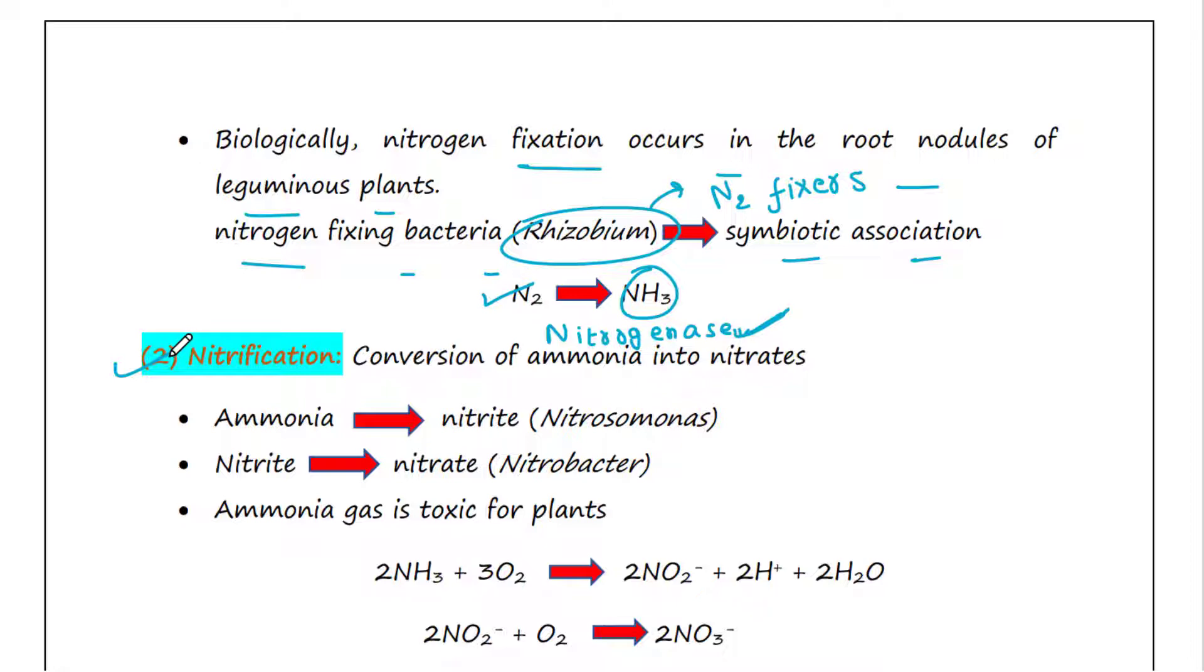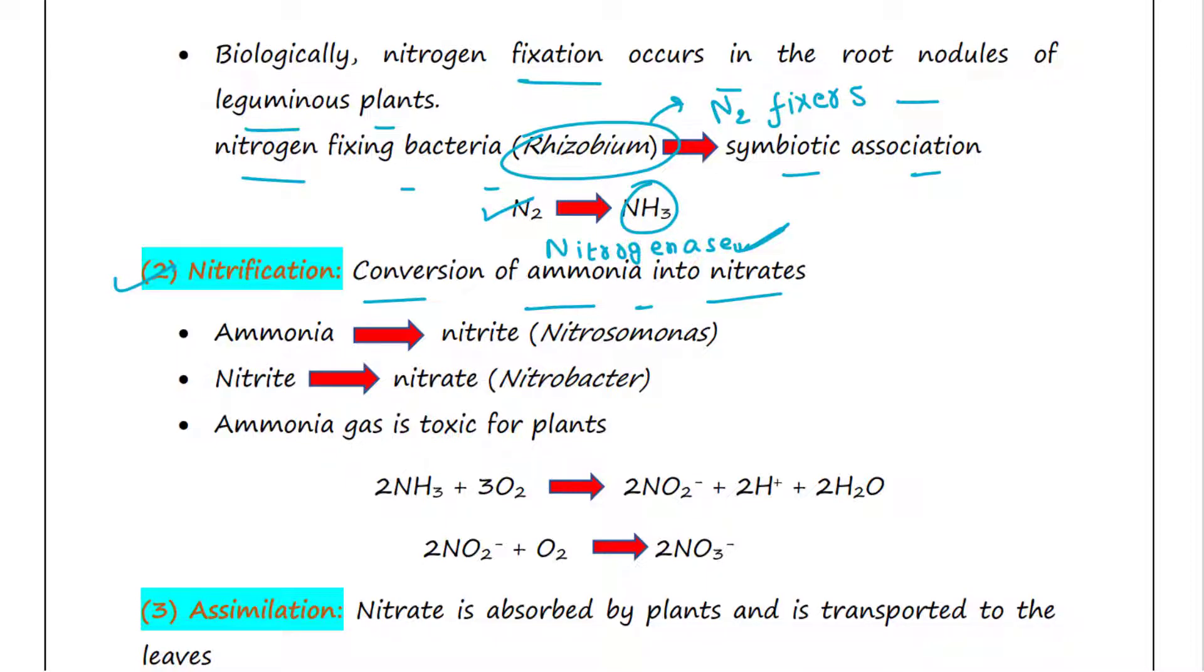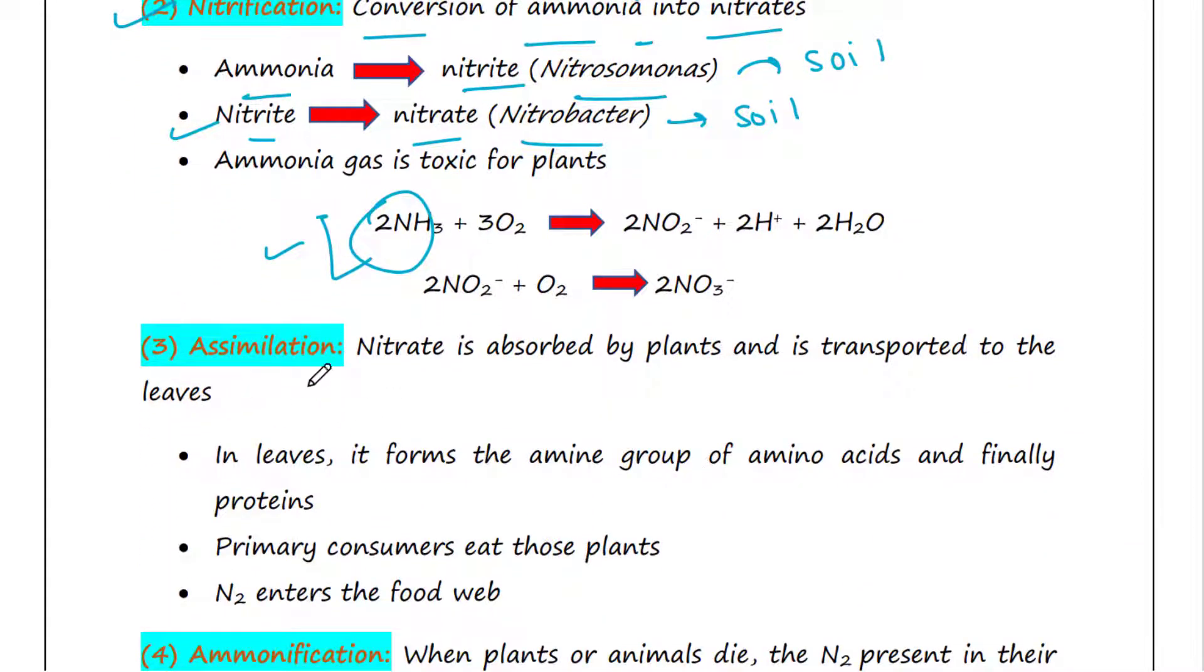Nitrogenase enzyme is capable of reducing nitrogen into ammonia and is present exclusively in prokaryotes. The next step is nitrification. The conversion of ammonia into nitrate is called nitrification. Ammonia is oxidized to nitrite by the bacteria Nitrosomonas, which is present in soil. This nitrite is further oxidized to nitrate with the help of soil bacteria Nitrobacter.